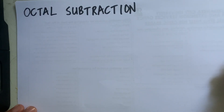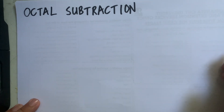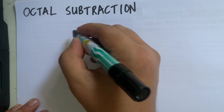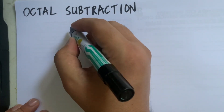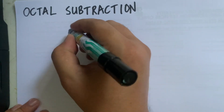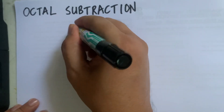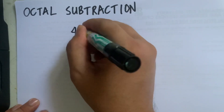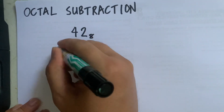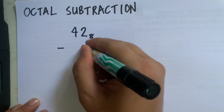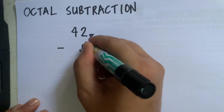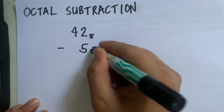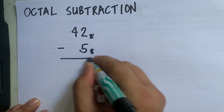Hi guys, in this video I'm going to teach you how to subtract octal numbers. So let us say you are given the number 42 in octal minus 5, again this is in octal.